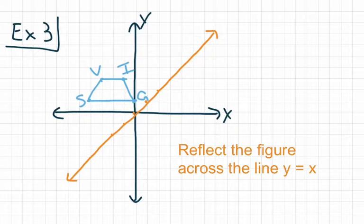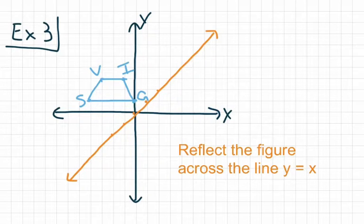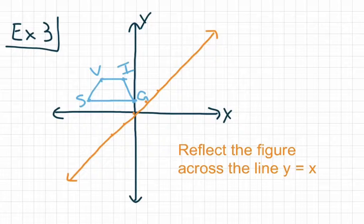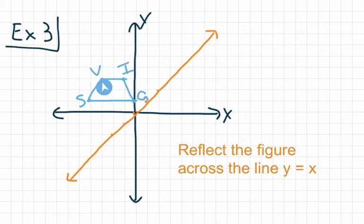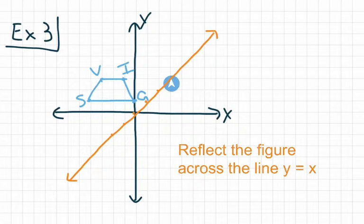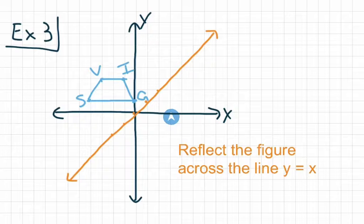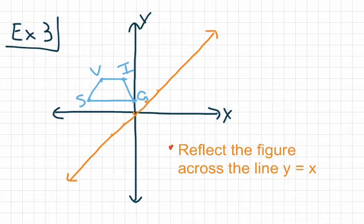We want to reflect our figure across the line y equals x. We still count the distance from each point to the line, but instead of continuing in the same direction, we have to make a turn once we reach the line and count going up or down. Starting with point V, we count 6 units to the right to reach the line, then turn and count 6 units down. Point V' ends up right there.